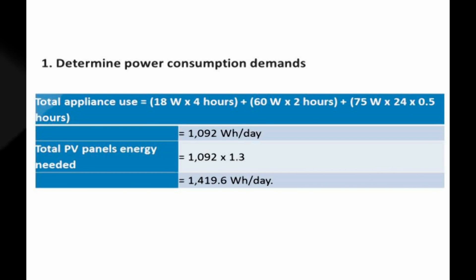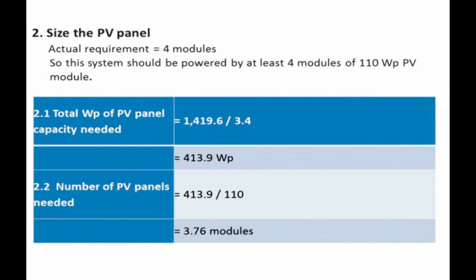Step 2: Size the PV panel. Step 2.1: Total Wp of PV panel capacity needed = 1,419.6 ÷ 3.43 = 413.9 Wp.